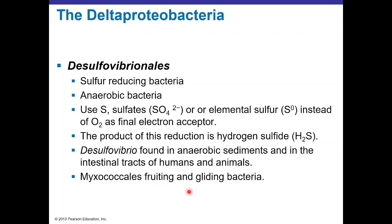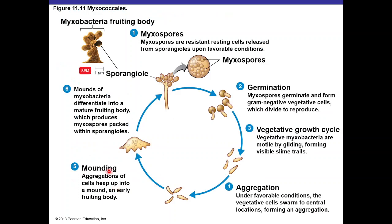Other Delta Proteobacteria can form fruiting bodies and glide, like Myxococcales. Myxobacteria have a fruiting body with a stem-like part ending in sporangioles containing myxospores. These myxospores are released, germinate into vegetative forms, aggregate into mounds, and eventually form a new mature fruiting body with sporangioles.